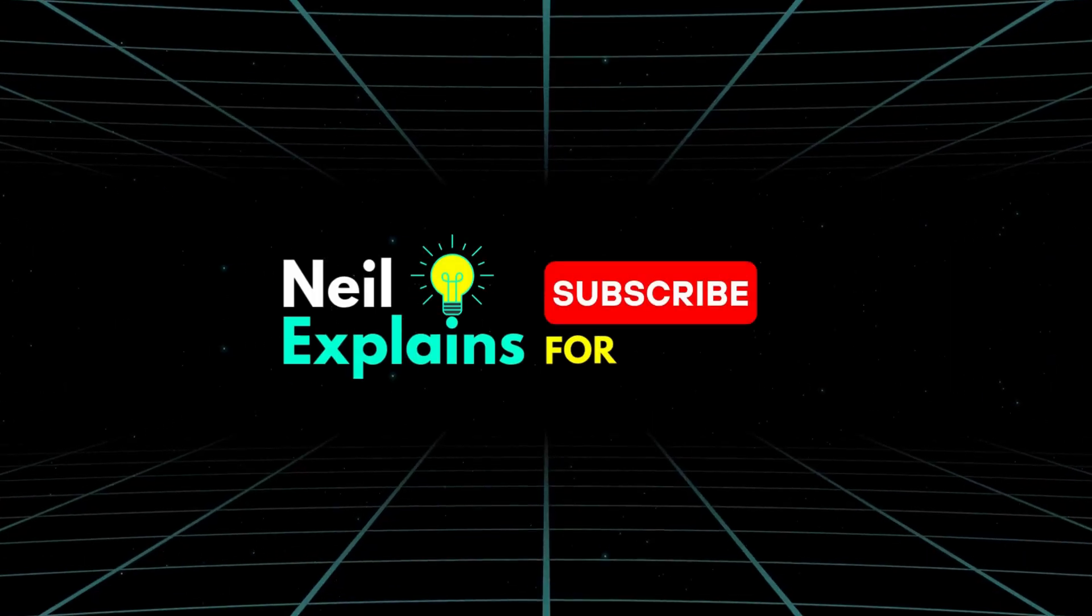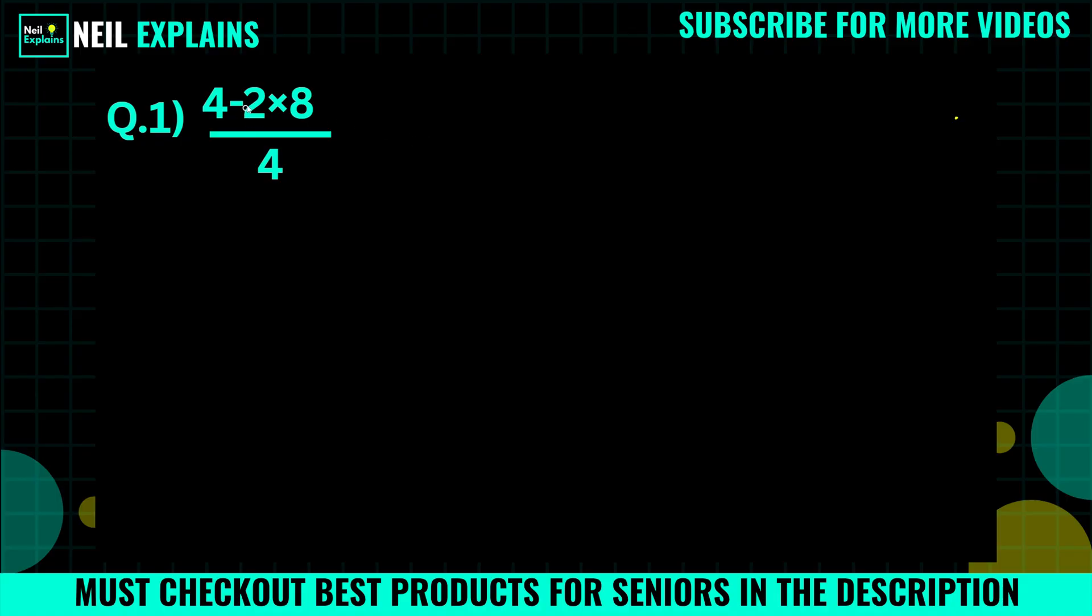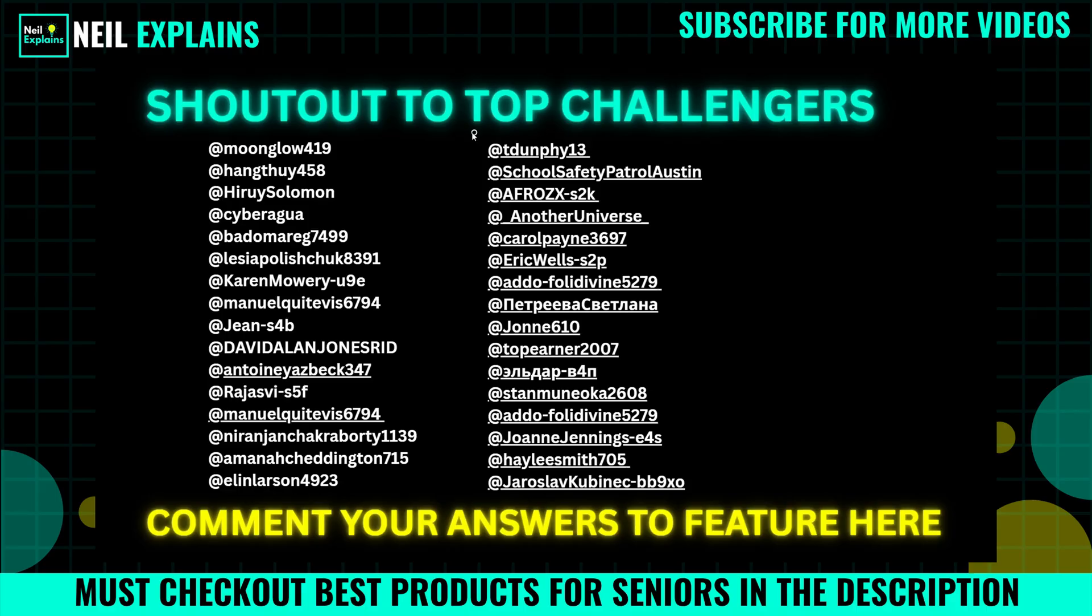Hello everyone and welcome back to Neely Explained. Today I come up with this final math question: 4 minus 2 times 8 divided by 4. Try to solve on your own and comment your answer to feature in the shortlist. These are top commenters. Try to feature here by commenting your answer.